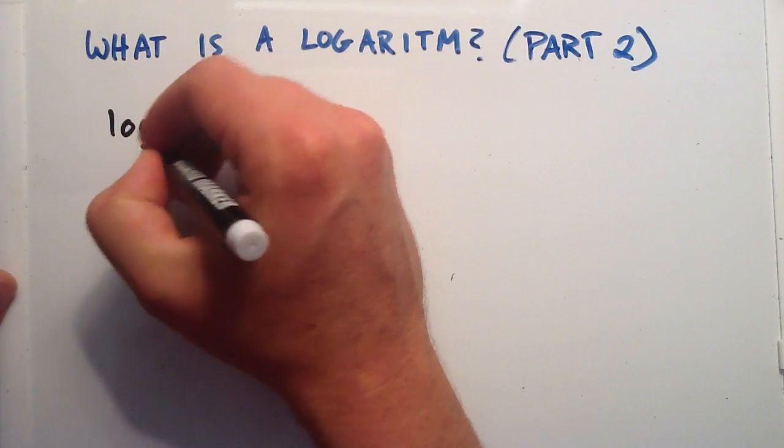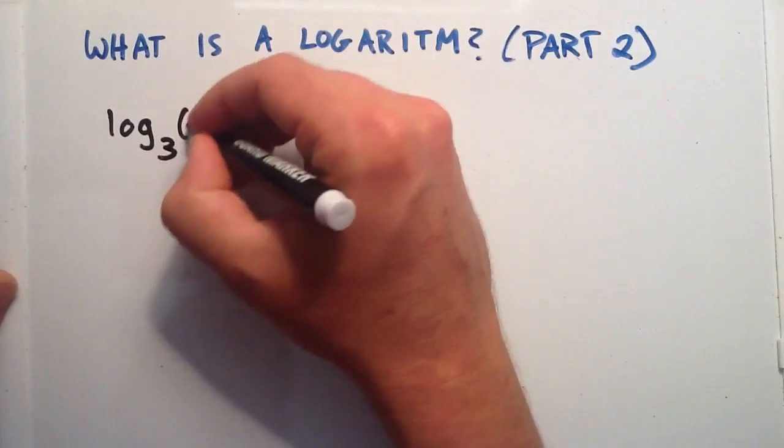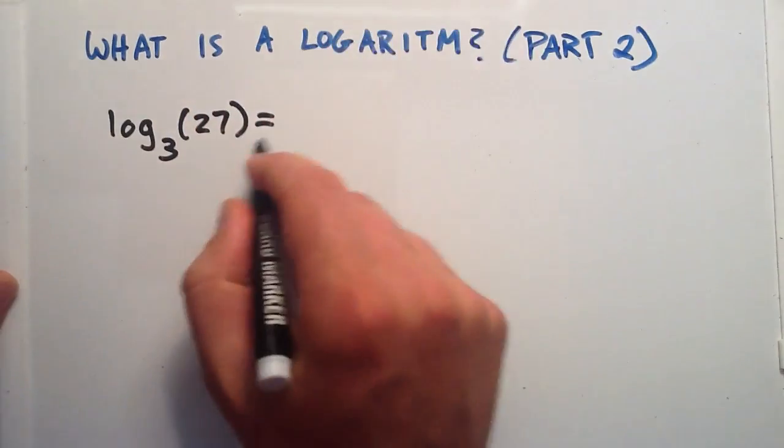Let's say that the log base 3 of 27, and that equals something.